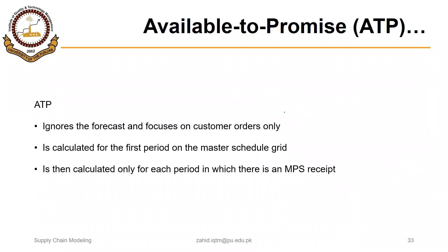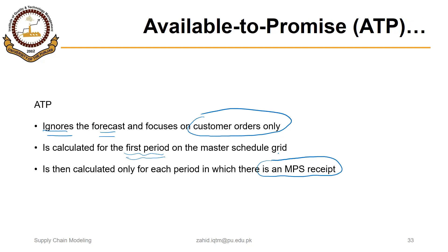ATP ignores the forecast and focuses on customer orders only. It is calculated for the first period on the master production schedule grid, and is then calculated only for each period in which there is an MPS receipt. For the first period the formula is slightly different; for the rest we can calculate ATP wherever there is an MPS receipt.